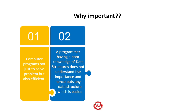A programmer with poor knowledge of data structures does not understand the importance and hence uses any data structure which is easier. As you have studied C or C++ programming, you must have gone through the concepts of arrays, pointers, structures, and unions. You know what kind of data should be stored using what kind of data type. If I just have roll numbers of students, I can use an integer array. But if I want to store roll number, address, and name — which are of different data types — I will use a structure.